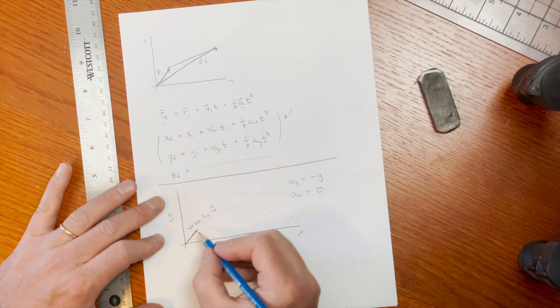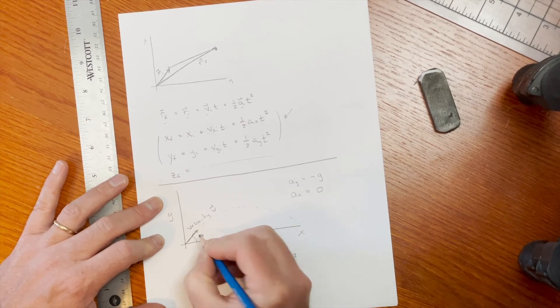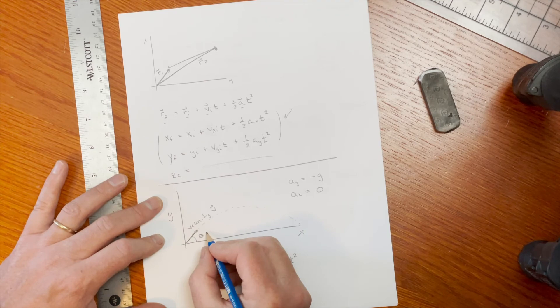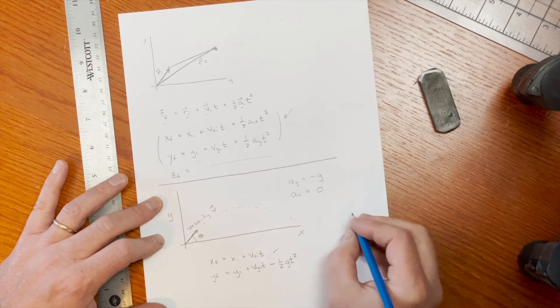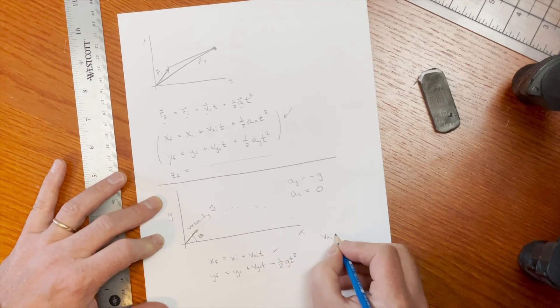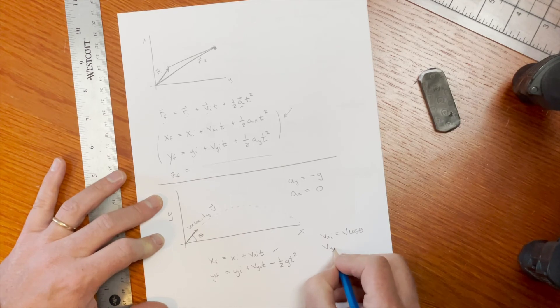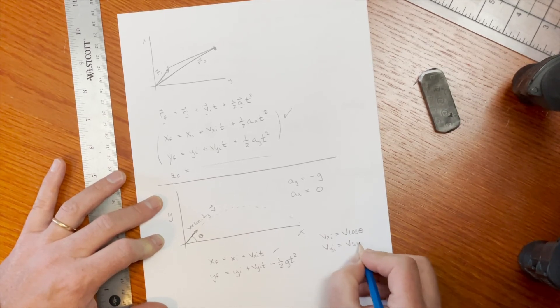And the different components of these velocities are going to just depend on what angle this is launched at. So if I launch this at an angle theta, then I can write that my x component initial is just going to be v times cosine of theta, and my y component is going to be v times sine of theta.